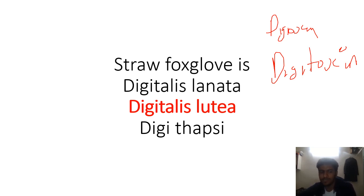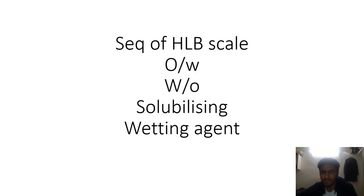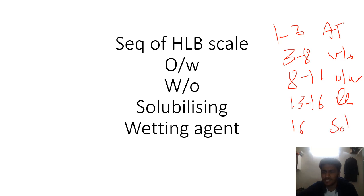HLB scale - how many times has this been asked. Three to eight is antifoaming, W/O emulsifier. Eight to sixteen is O/W emulsifier. Thirteen to sixteen are detergents.